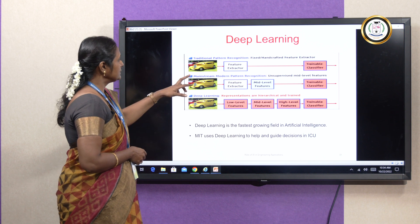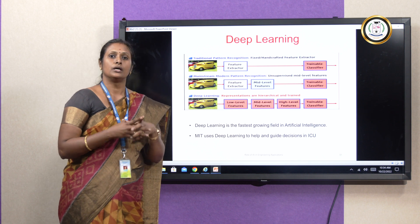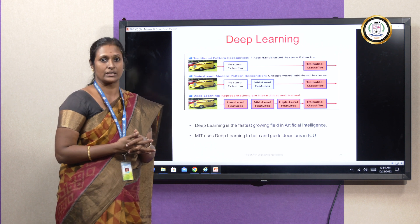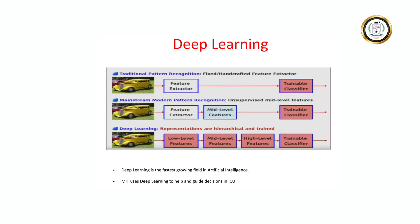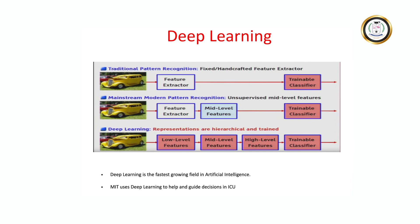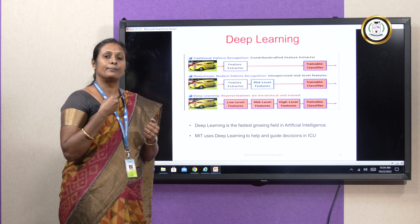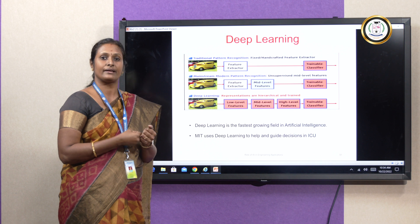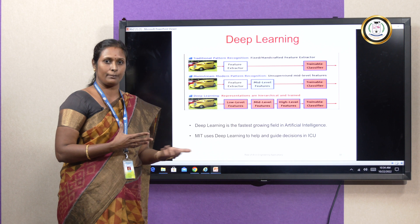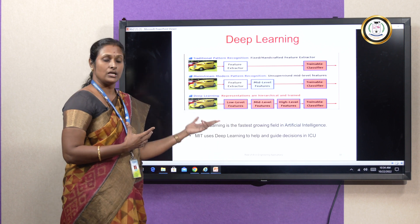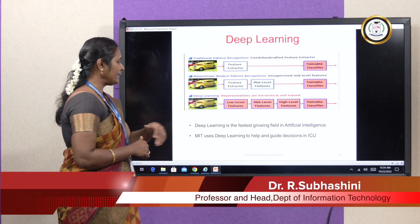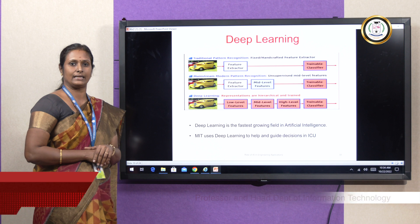Coming to deep learning — deep learning mimics how a human brain behaves, mimicking a human brain neural network in which there are many hidden layers. With the help of these hidden layers, deep learning will extract all the low-level features so that we can easily predict results in a precise manner and accurately identify objects. If you give an image — whether it is a dog, a cat, or a car — all these observations can be done precisely using deep learning algorithms.